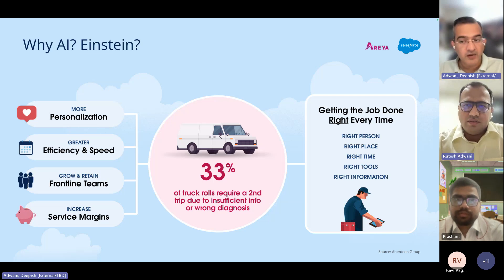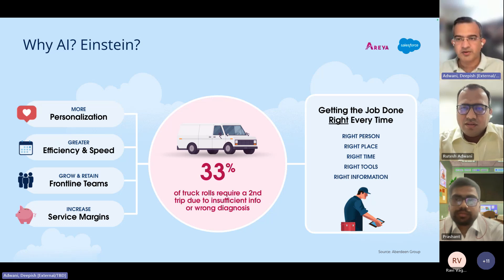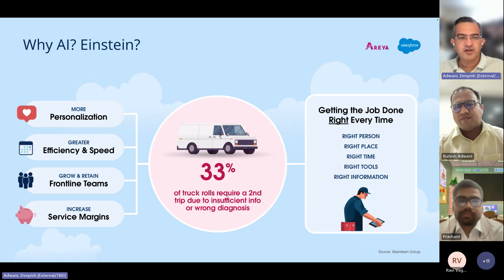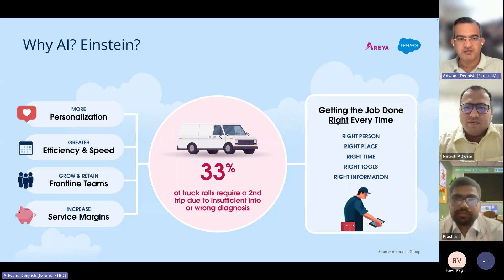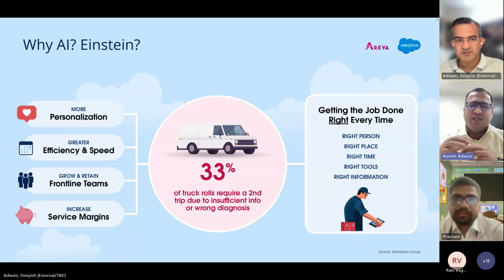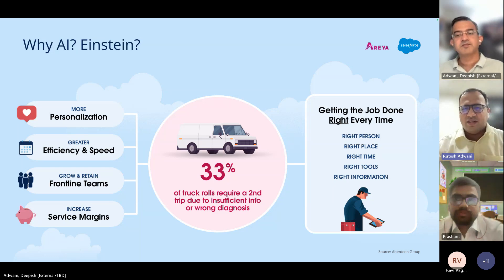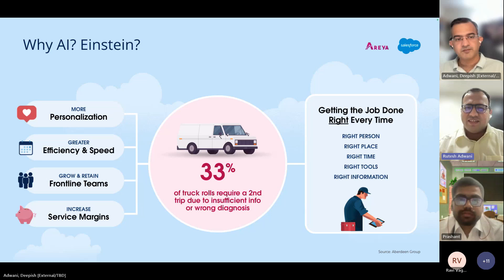Why now? Because now it is very much possible to do it. AI and machine learning are not new concepts — the industry has been working on them for the past 15 years. It has just picked up pace. Einstein is simply an umbrella under which all Salesforce AI products are based.